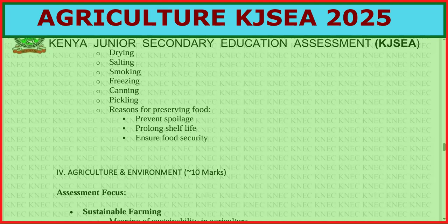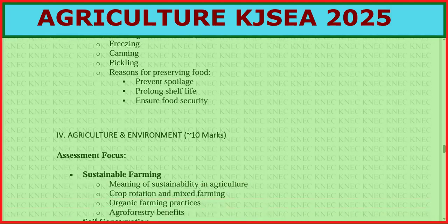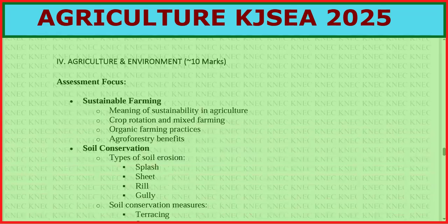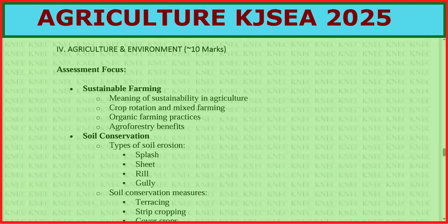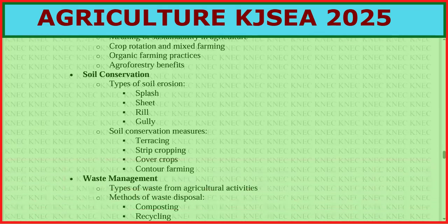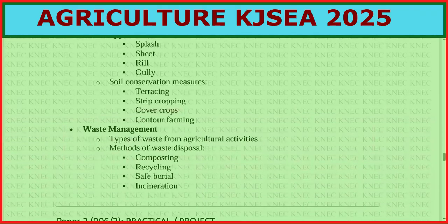For agriculture and environment, focus mainly on sustainable farming: meaning of sustainability in agriculture, crop rotation and mixed farming, organic farming practices, and agroforestry benefits. For soil conservation, cover types of soil erosion — gully erosion, rill erosion, sheet erosion, and splash erosion — and soil conservation measures such as strip cropping, cover crops, and contour farming.